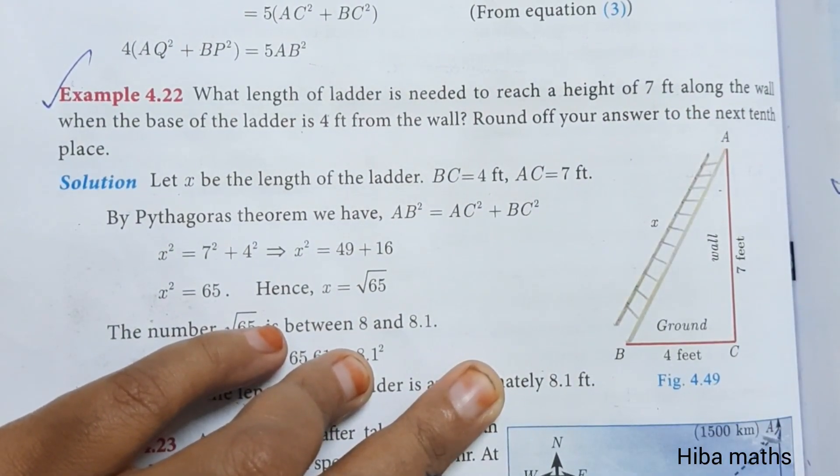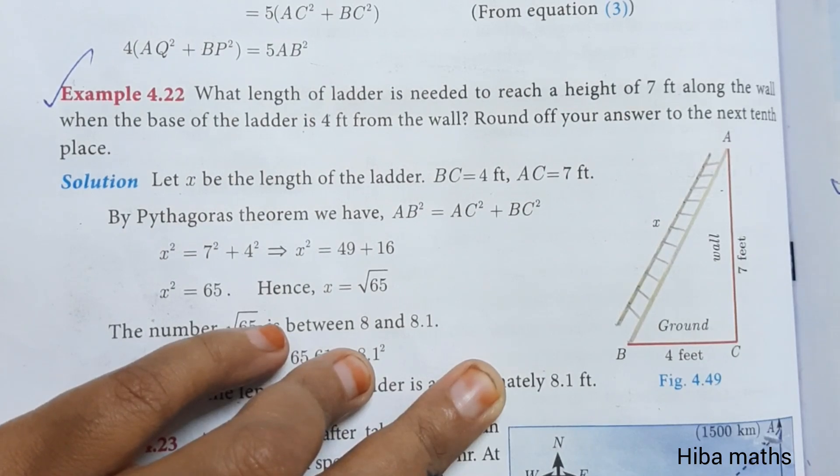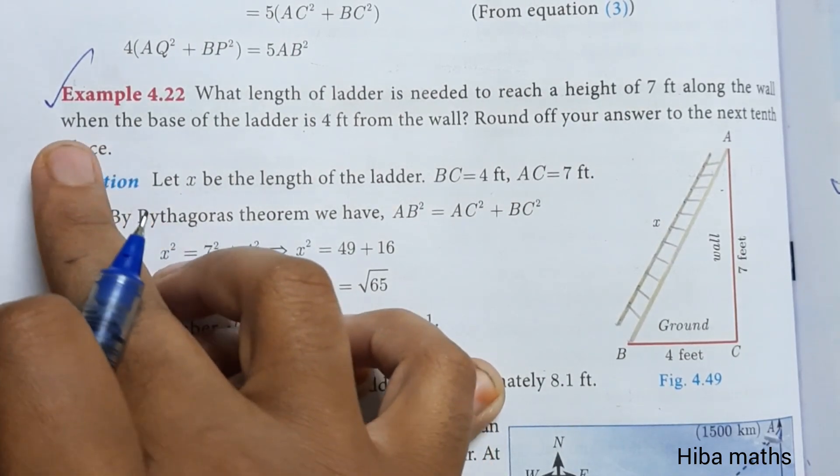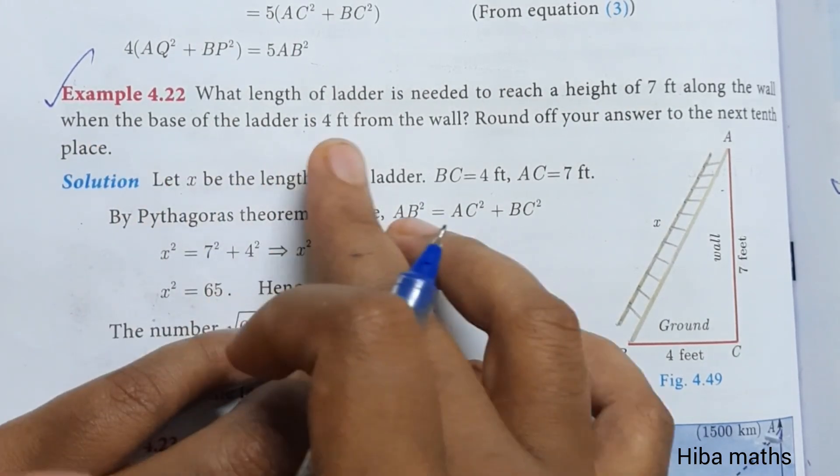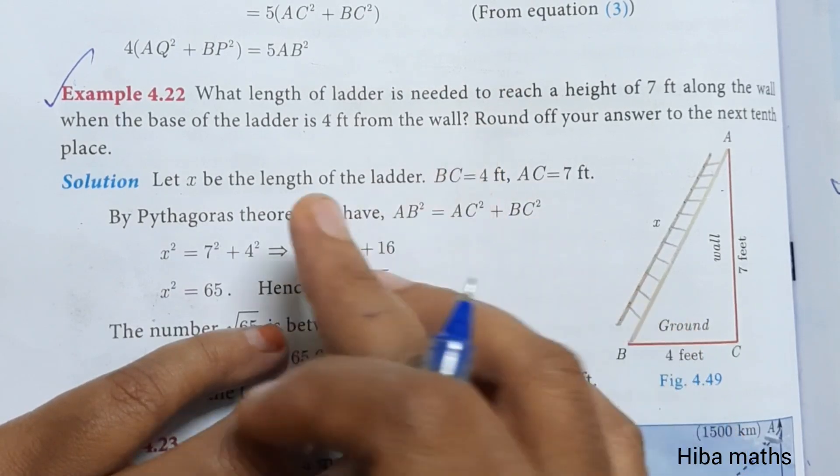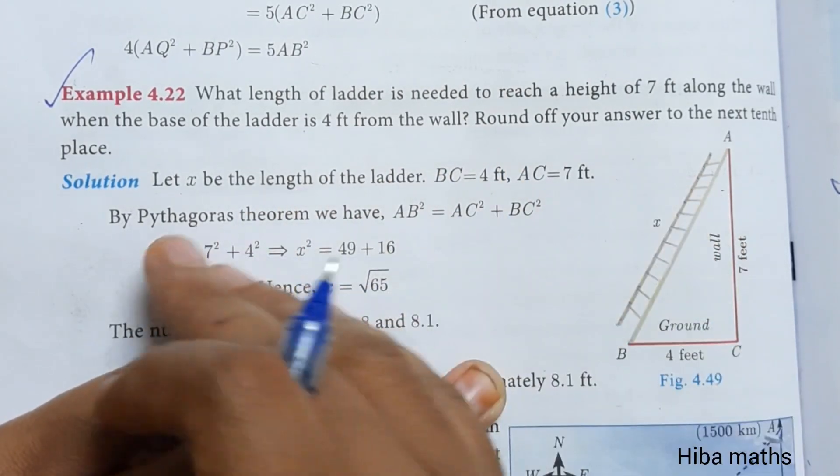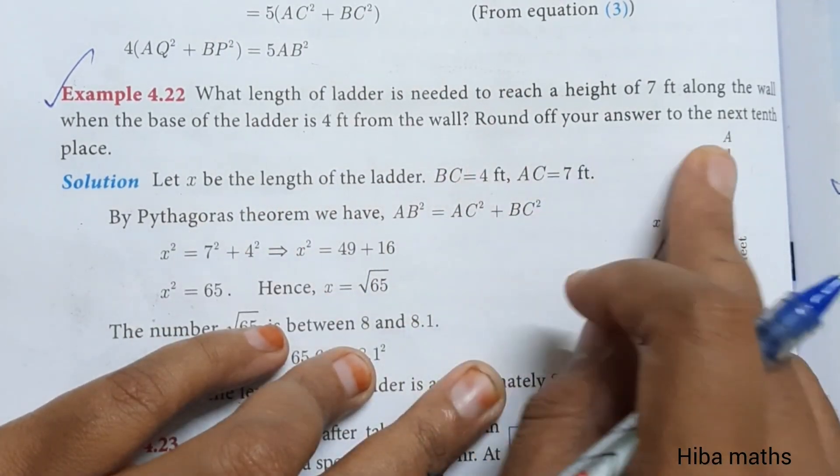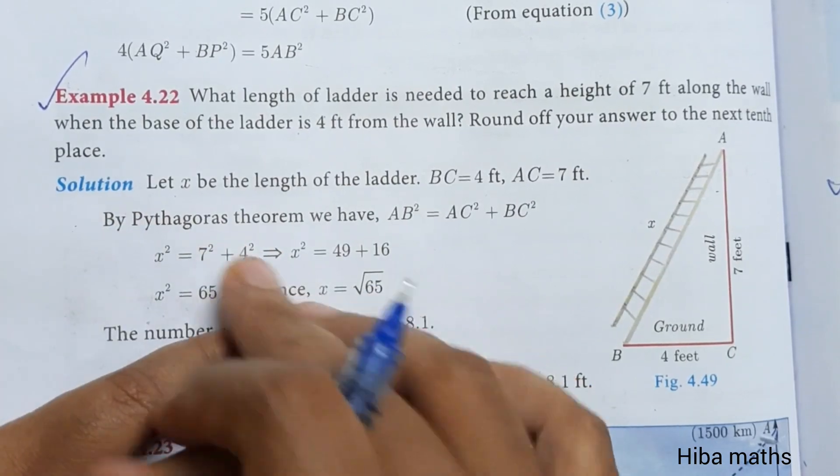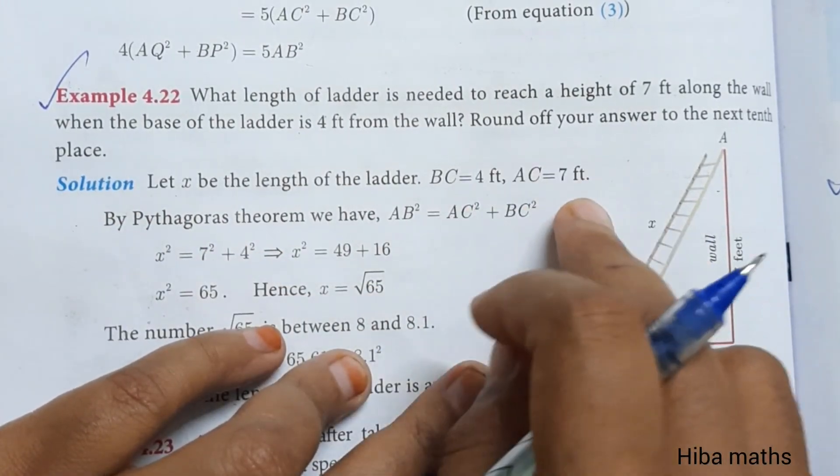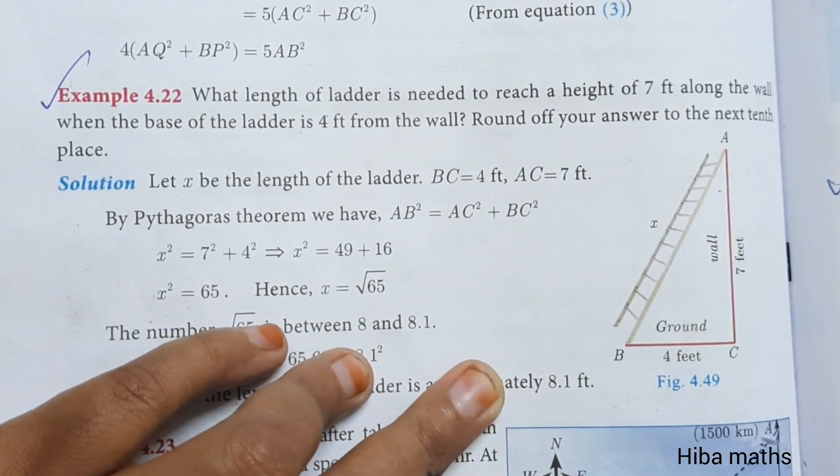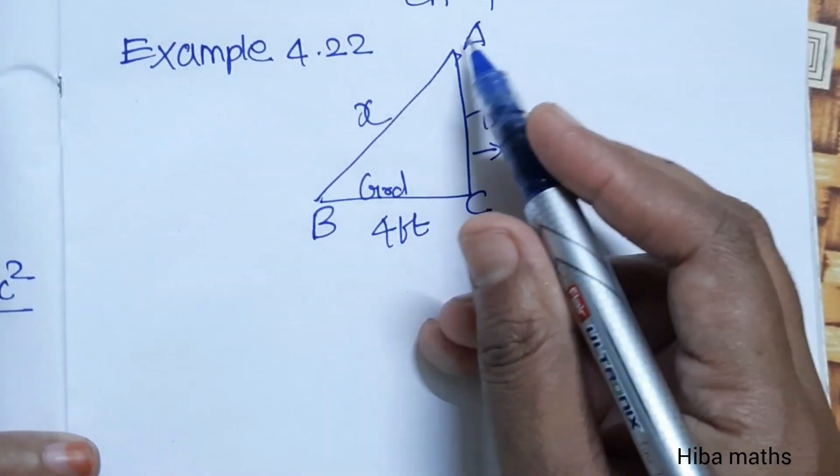When the base of the ladder is 4 feet from the wall, round off your answer to the next tenth place. We are going to round off to the next tenth place. How can we solve this? This is the wall and the ground.